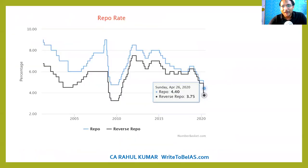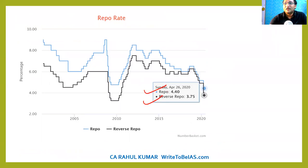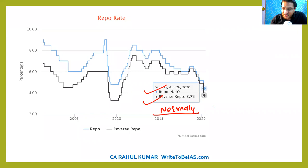The latest repo rate is 4.4% and the reverse repo rate is 3.75%. Normally, the difference between the repo and reverse repo rate used to be 0.25%. Now this difference is 0.65%.